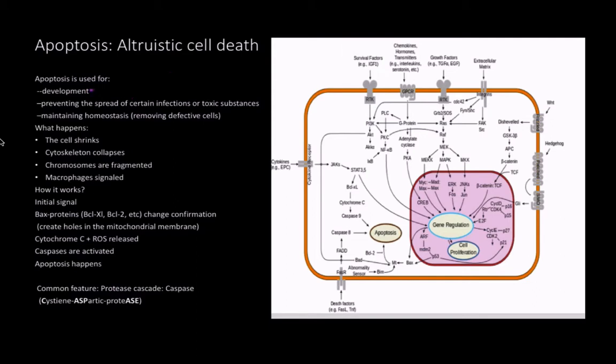So apoptosis is involved in a lot of things. It's involved in development, which development and cancer are really similar. Like, for example, your hand probably all heard the story that your hand starts off kind of like as webbed, and then over time that tissue dies off. But also your brain, your brain develops a lot by killing neurons, which is kind of sad to think about.